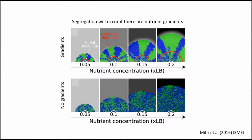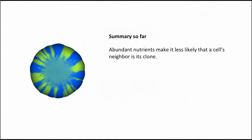This might seem like a trivial project looking at small differences in colonies, but if you think of it as a group of cells within a cancerous tumor, this could be an important effect to understand. If you start with many different genotypes of tumor cells, you will eventually start losing different cells depending on gradients of nutrients or oxygen. To summarize this first part: abundant nutrients in an environment can make it less likely that a cell is surrounded by its clone — you stay in a well-mixed group for longer if you're in a high-nutrient environment.